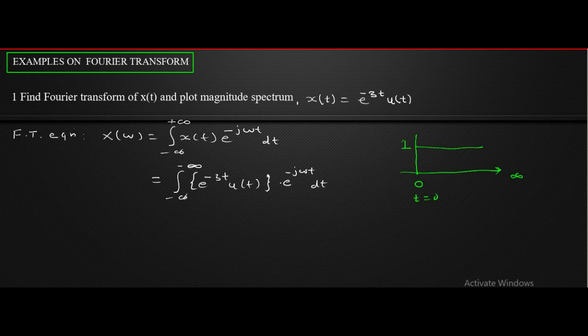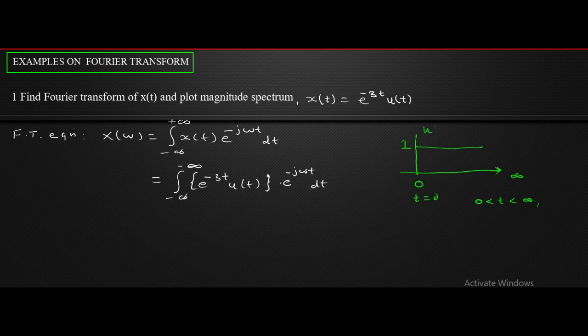The time range of u of t is 0 to infinity. Therefore, the time range of the whole signal is 0 to infinity. Automatically, when we multiply any signal with the unit step function, its time range becomes 0 to infinity, because it is u of plus t. If it were u of minus t, the range would be 0 to minus infinity. Let us substitute this limit and proceed.